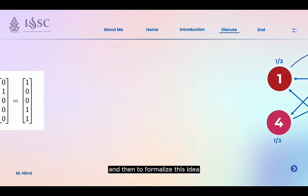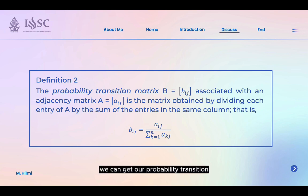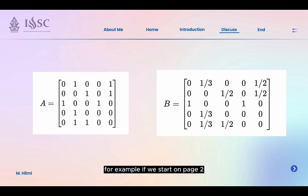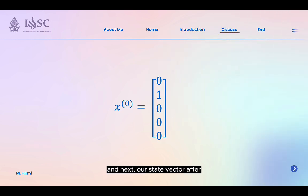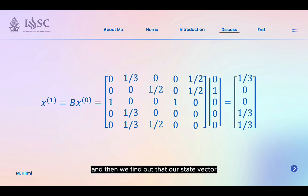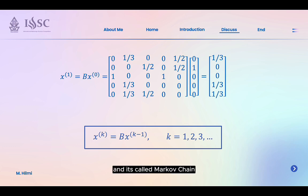To formalize this idea, we make the following definition. The probability transition matrix is obtained by dividing each entry of the adjacency matrix by the sum of entries in the same column. By this definition, we obtain our probability transition matrix associated with our adjacency matrix. This matrix shows the probabilities of randomly moving from one page to another with a mouse click. For example, if we start on page 2, our initial state vector and state vector after one mouse click will be as shown. We find that our state vector resulting from successive mouse clicks forms a sequence called a Markov chain.